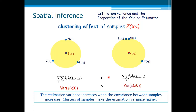It is important to remark how minimizing the estimation variance affects the properties of the Kriging estimator. Consider the clustering effect of samples: the more samples are clustered, the worse the estimate, as in the bad case here. On the contrary, when there is no cluster, we take more advantage of available information from the three samples. In terms of estimation variance, when samples are spread out, the covariance between samples is lower, the estimation variance is lower, and the estimate is better.